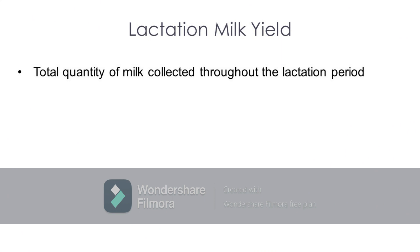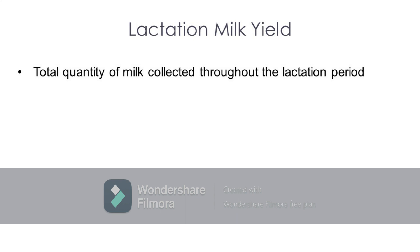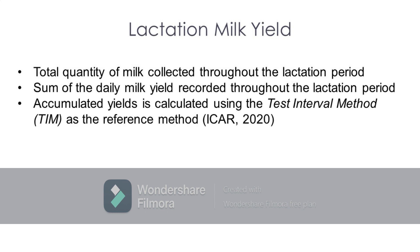The next parameter is the calculated total amount of milk yield produced by the cow in kilograms, or the lactation milk yield. The actual yield throughout the lactation period can be determined by simply getting the sum of the daily milk yield recorded. Meanwhile, in the absence of a daily milk yield record, lactation milk yield can still be estimated using the test interval method as described by the International Committee for Animal Recording.